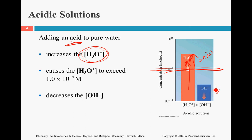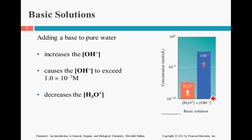Consequently, the OH minus goes down. So every time the H3O plus goes up, the OH goes down — they are inversely proportionate. Conversely, when OH minus is increasing above the neutral line, that makes it a base. So when the H plus is above this line, it's an acid. When the OH minus is above this line, it's a base.